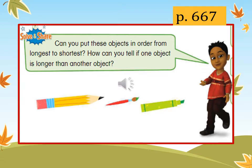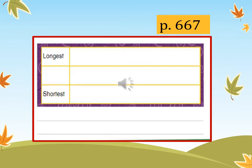Now we are going to do a task. On page 667 of your book, you can see some objects. Get ready with your pencil, paintbrush, and your marker. Can you put these objects in order from longest to shortest? How can you tell if one object is longer than another? You can put your answer in the table below — from longest to shortest. You can draw or simply write the name.